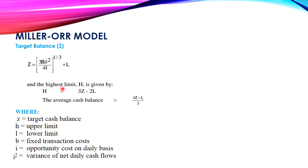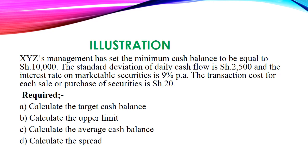The upper limit H is given by 3Z minus 2L, and the average cash balance is given by (4Z minus L) divided by 3. Here Z is the target cash balance, H is the upper limit, L is the lower limit, B is the fixed transaction costs, I is the opportunity cost on a daily basis, and variance is the variance of net daily cash flows.